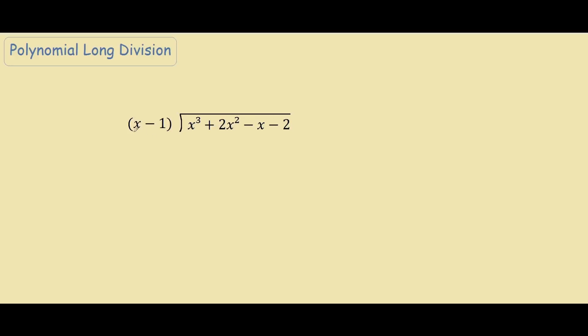When doing long division with polynomials, let's focus on just this x. Our first step is to look at this x cubed and divide by x, so you will get x squared. And then our second step is to look at this x squared and multiply it by x minus 1. So you will have x squared times x is x cubed and negative 1 times x squared is negative x squared.